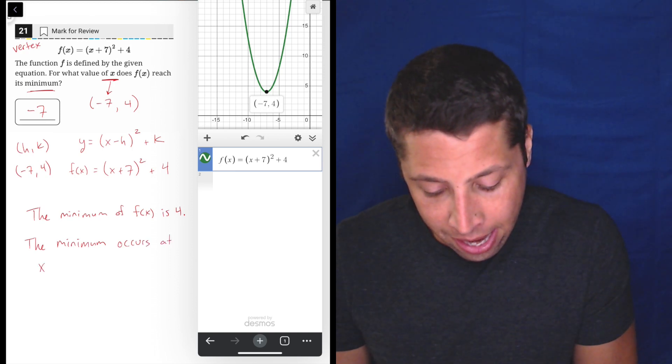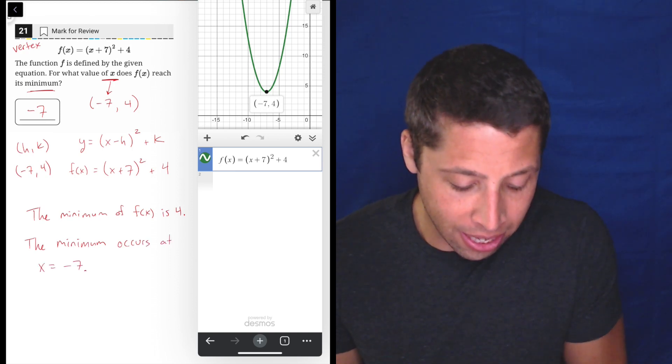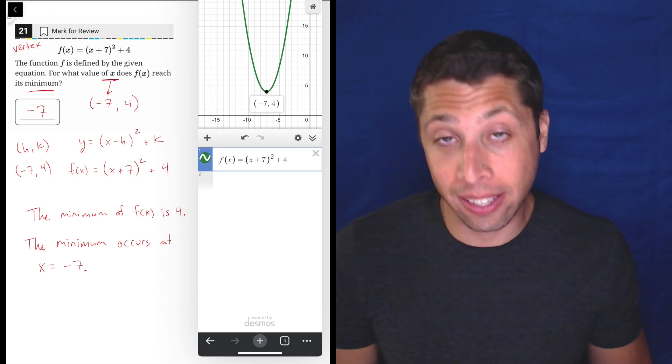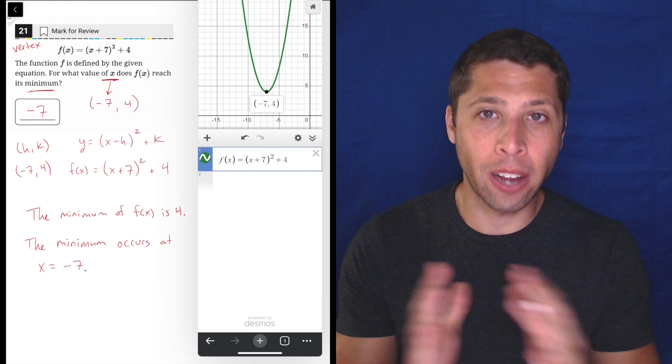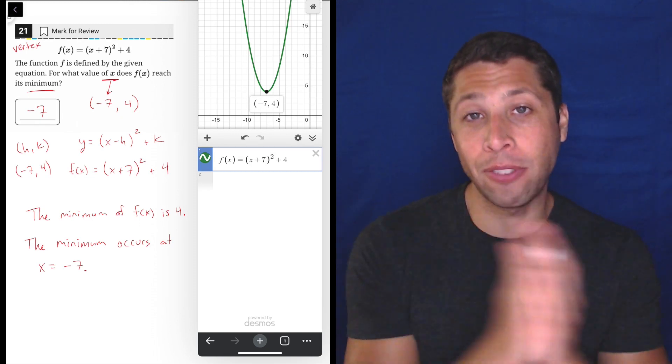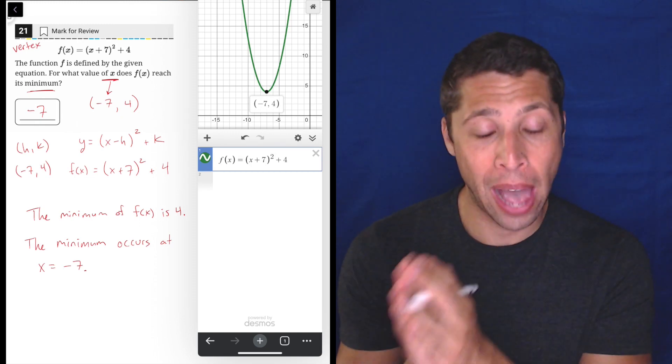But the, we would say maybe the minimum occurs at x equals negative seven, or maybe even get rid of the x equals part and just say the minimum occurs at negative seven. That is a way of talking about where left and right horizontally the minimum happens.